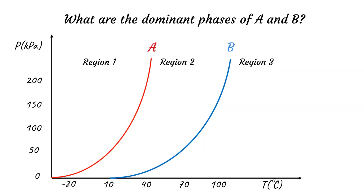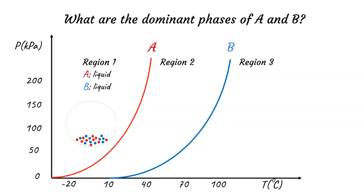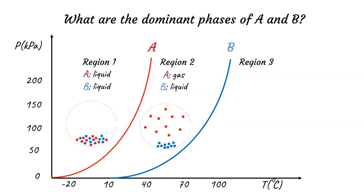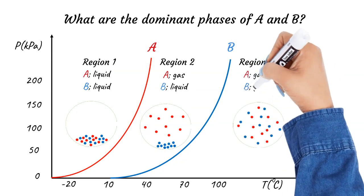Region 1 conditions are above both substance A and B vapor pressure curves; therefore, both A and B are in the liquid phase. Region 2 conditions are below the vapor pressure curve of A; therefore, substance A will be in the gas phase. Region 3 conditions are below both substance A and B vapor pressure curves; therefore, both A and B are in the gas phase.